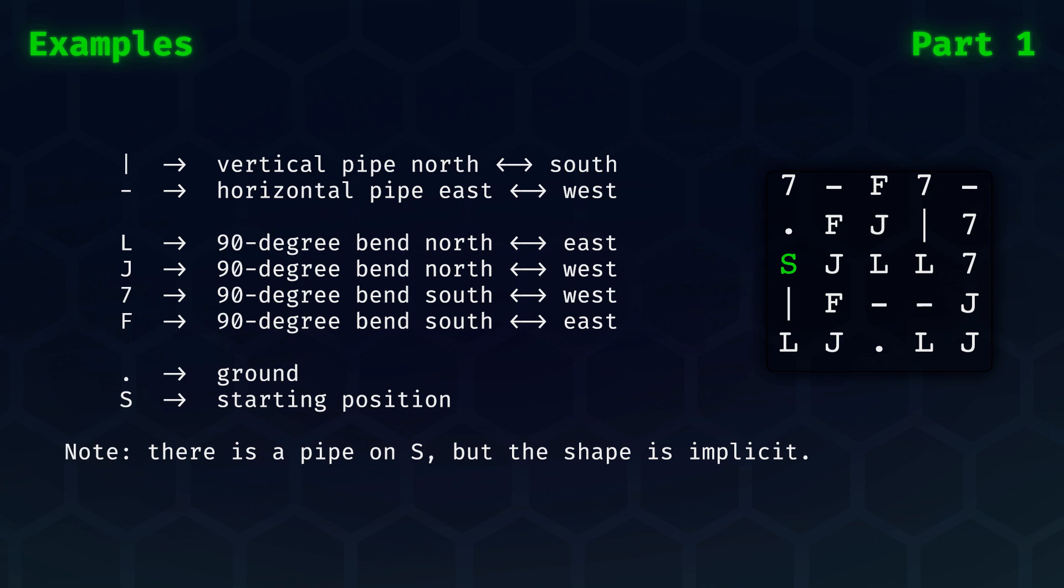Then there are four 90-degree corner pipes, which connect as you would expect. The characters used are L, J, 7, and F. Lastly, there is empty space, or just ground, indicated by a dot.